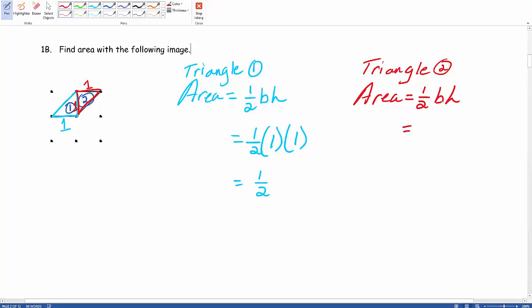As a result, all we have to do is plug in our values for base and height. So we have 1/2 times the base of 1 times our height of 1. As a result, 1/2 times 1 times 1 gives us 1/2.